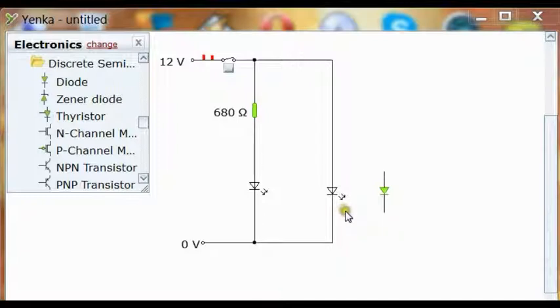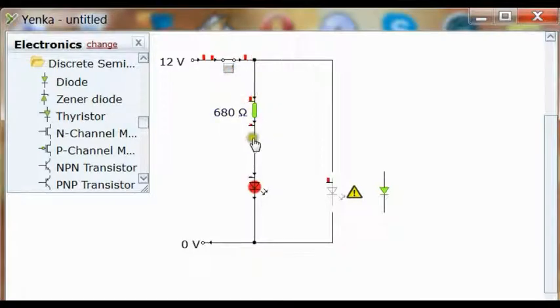Now before you start wiring LEDs to a power supply and blowing stuff up, there are a couple of things you need to know. For example, you're probably wondering why one of these doesn't have a resistor attached to it in series, and one of them does have a resistor in series. That's why. The resistor is required to limit the current.